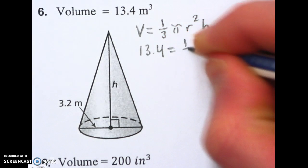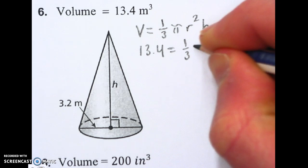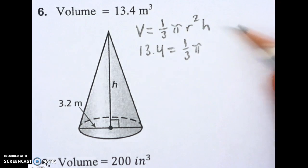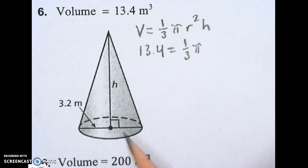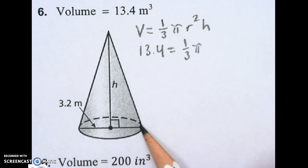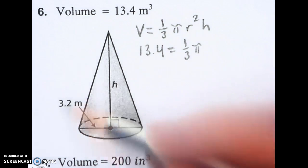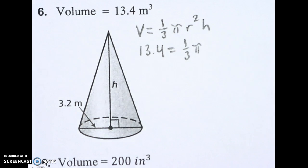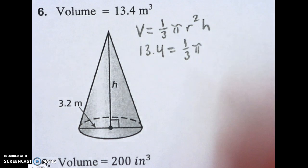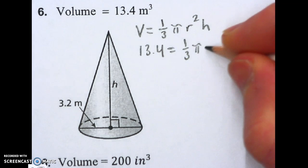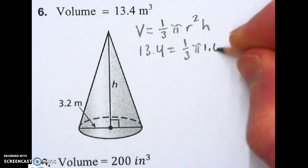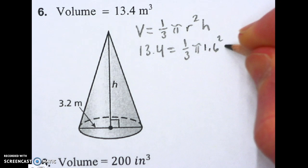It's going to be equal to 1/3 pi. And my r — if you see here, there's a line that goes all the way across the circle. That means it's giving you the diameter. I need to half this value to get the radius. So, that's going to be 1.6. So, this is 1.6 squared times the height.